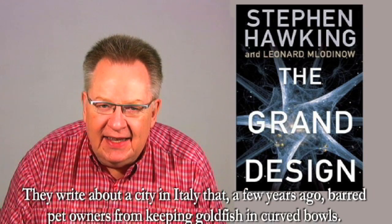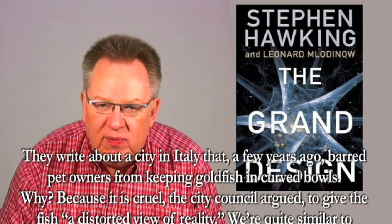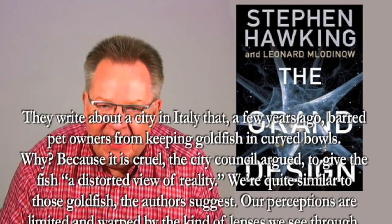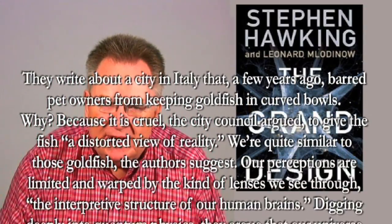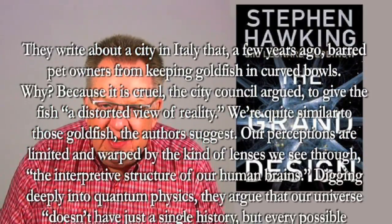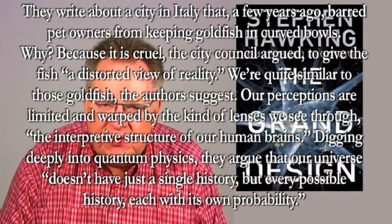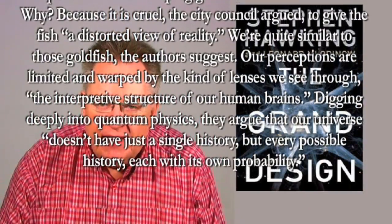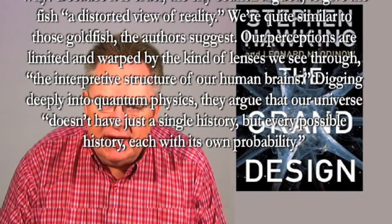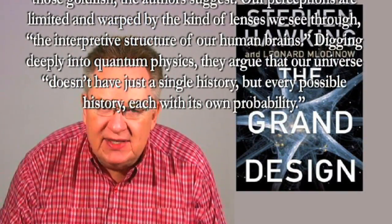They write about a city in Italy that a few years ago barred pet owners from keeping goldfish in curved bowls. Why? Because it is cruel, the city council argued, to give the fish a distorted view of reality. We're quite similar to those goldfish, the authors suggest. Our perceptions are limited and warped by the kind of lenses we see through — the interpretive structure of our human brains. Digging deeply into quantum physics, they argue that our universe doesn't have just a single history, but every possible history, each with its own probability.